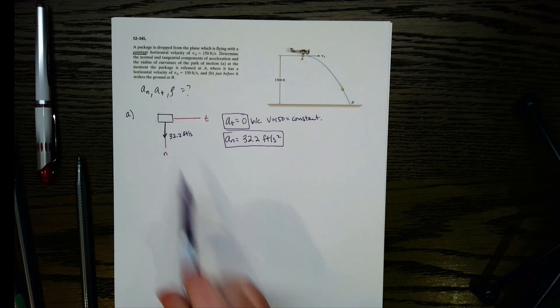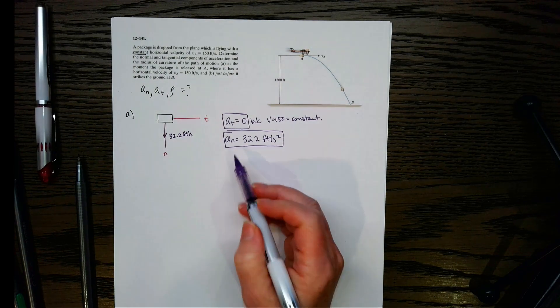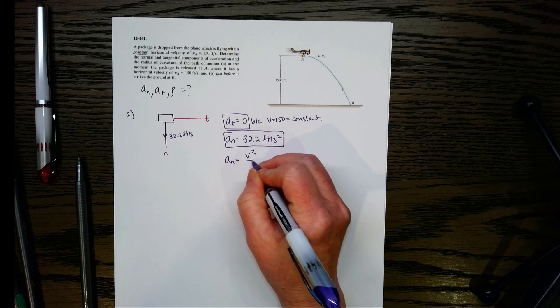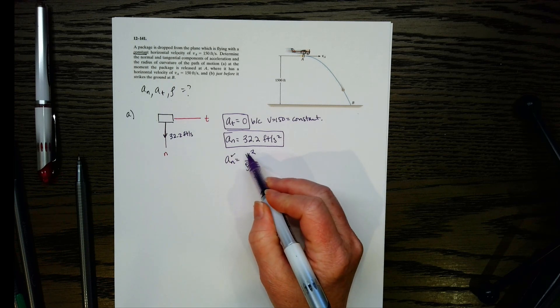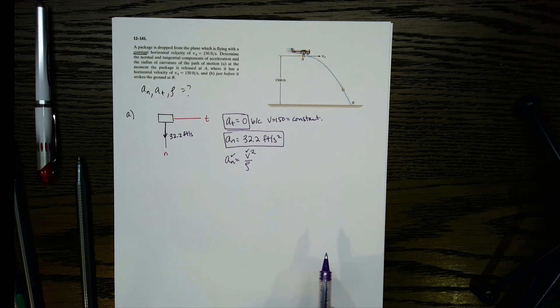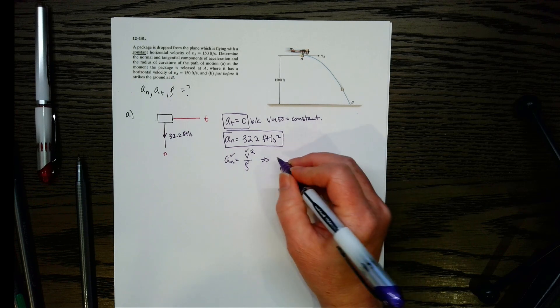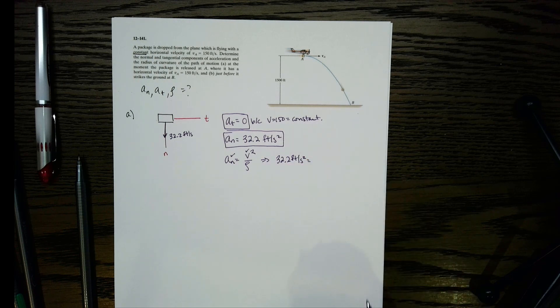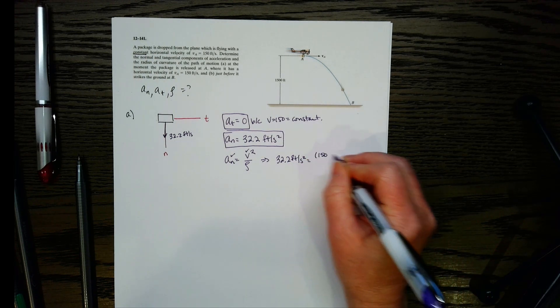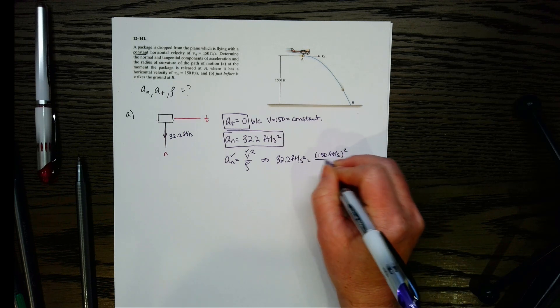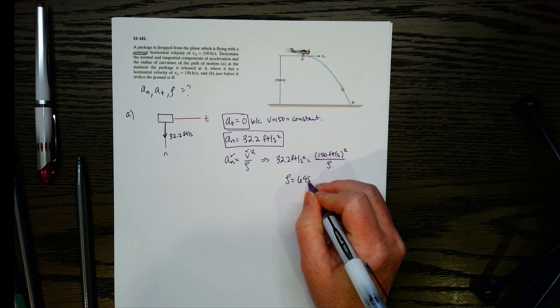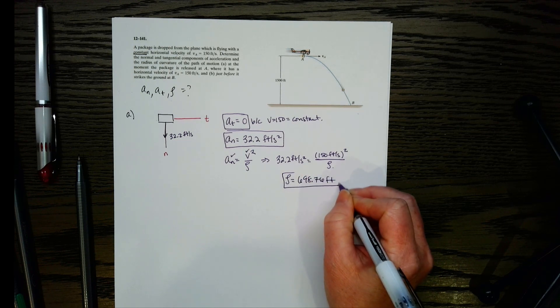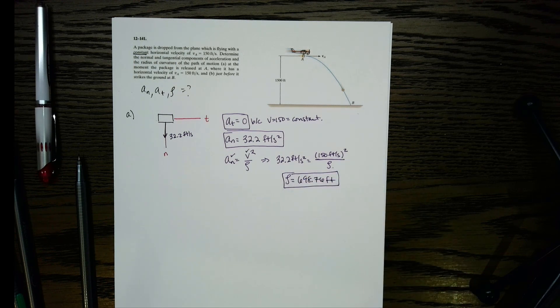Next thing we need is rho radius of curvature. We know that the normal acceleration can be set to V squared over rho. I'm looking for this, I have this, and do I have V? I do have V at A, because it was 150. So I have everything except for rho, so let's plug those values in and then we can solve. So left side will be 32.2, and then it's going to equal V, so 150 feet per second, square that thing, and then we've got rho on the bottom. Now let's solve for rho. So rho will be 698.76 feet. Not too bad for that one. That one was pretty straightforward.